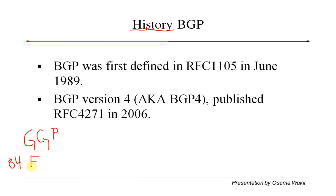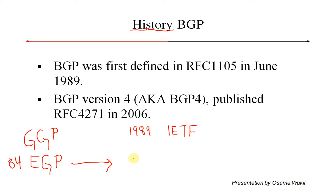Then in 1984 another protocol came up known as Exterior Gateway Protocol (EGP), which also had many drawbacks and deficiencies. The key twist happened in 1989 at an IETF conference where some Cisco and IBM engineers met up and drafted a new protocol that was an enhancement on EGP, and they called it Border Gateway Protocol (BGP).